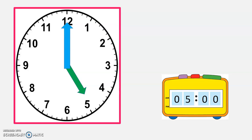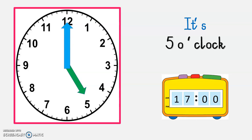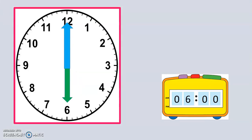Long hand on the 12, short hand on the 5 — it is 5 o'clock. Digital time is 05:00 in the morning, and the afternoon time is 17:00, meaning 17 hours have gone past. Long hand on the 12, short hand on the 6 — it is 6 o'clock. Digital time is 06:00 in the morning; afternoon time is 18:00, meaning 18 hours have gone past.